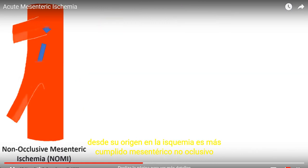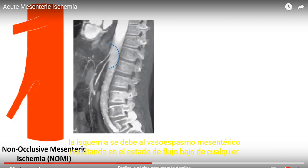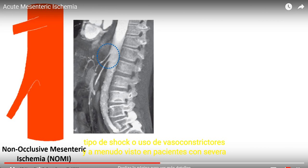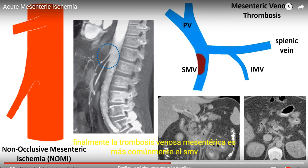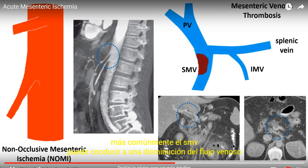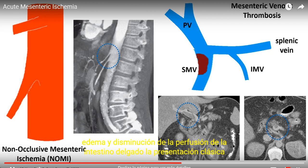Non-occlusive mesenteric ischemia is due to mesenteric vasospasm resulting in a low flow state from any kind of shock or use of vasoconstrictors, and is often seen in patients with severe cardiac failure. Finally, mesenteric venous thrombosis, most commonly of the SMV, can lead to decreased venous outflow, edema, and decreased perfusion of the small intestine.